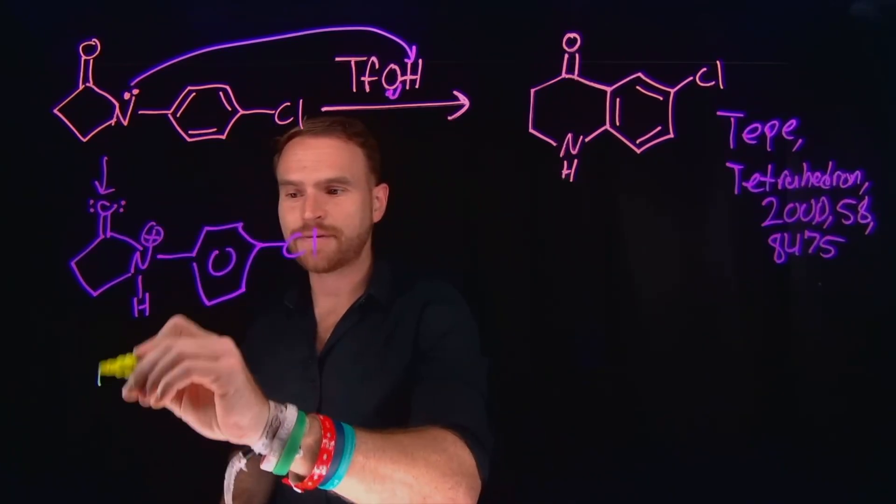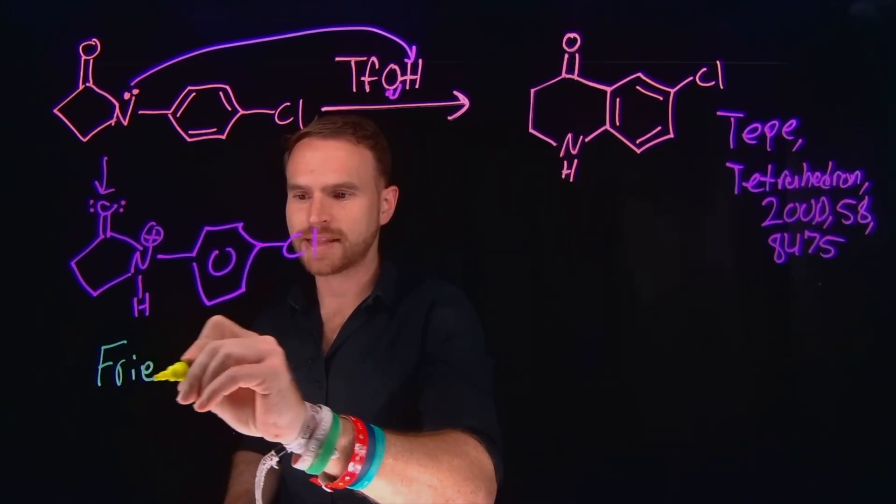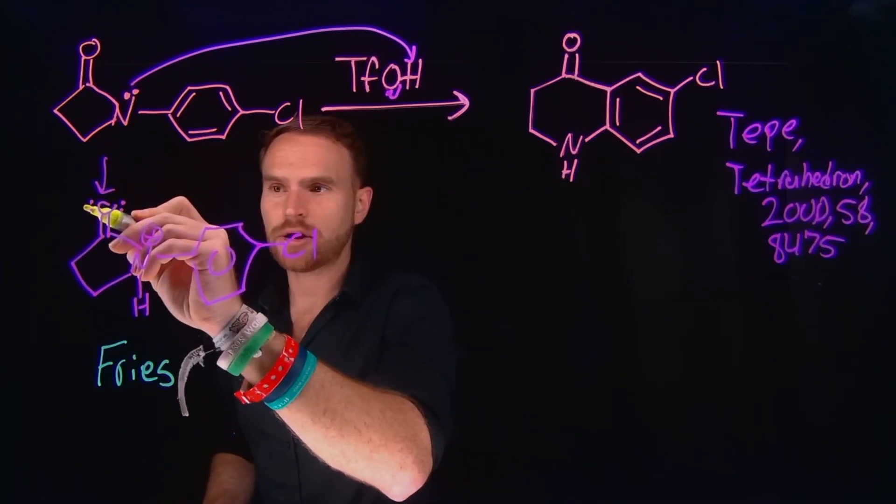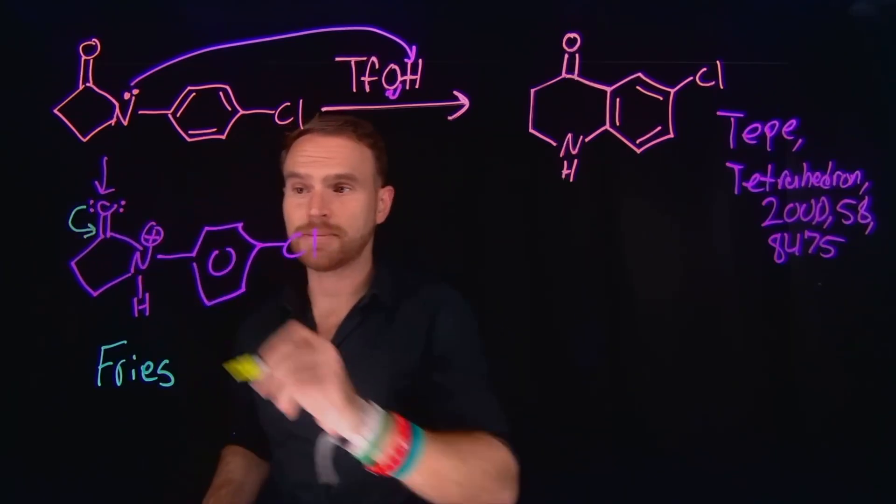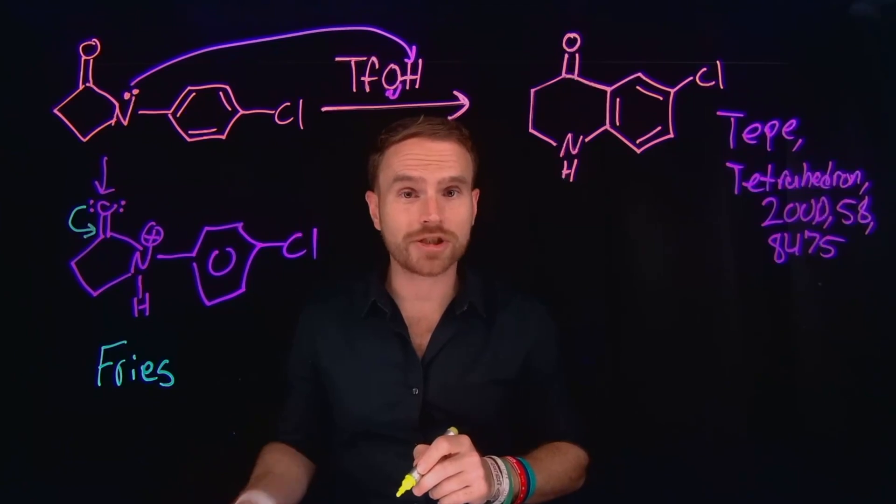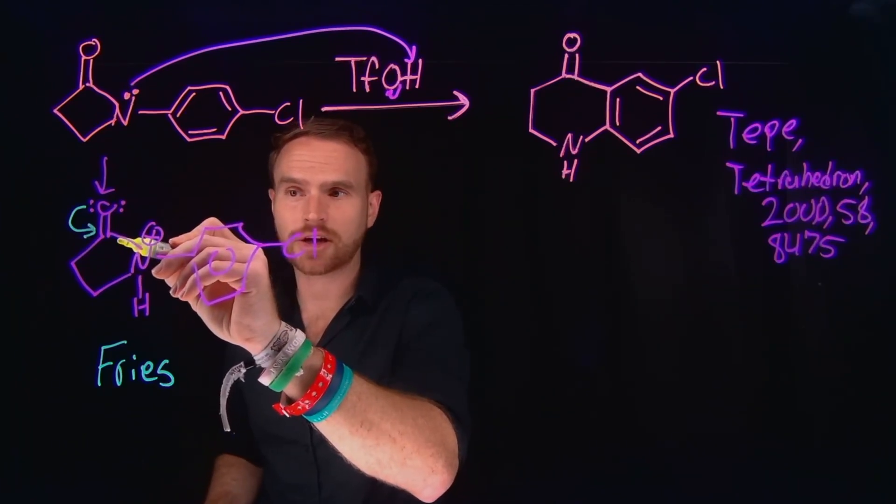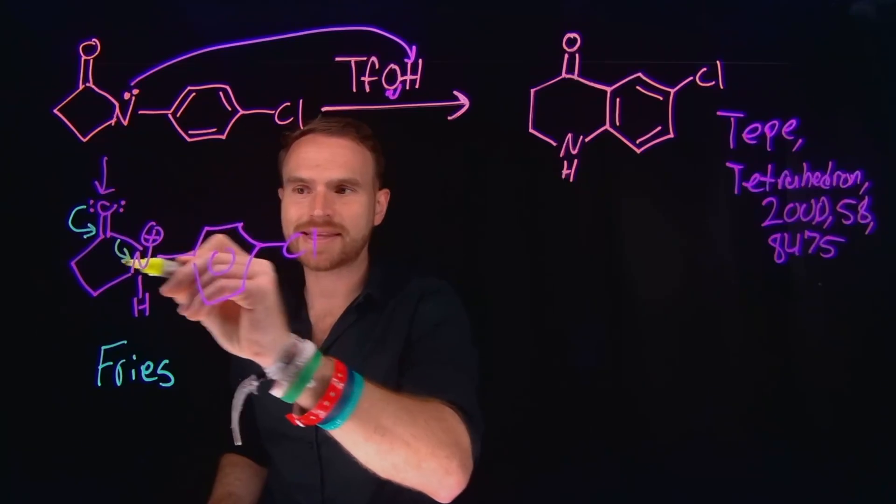What happens next is known as a Fries type of rearrangement, F-R-I-E-S. What will happen is that this lone pair of electrons on oxygen will come down to make a carbon to oxygen triple bond, which is known as a carbonium ion, because we're going to break this carbon to nitrogen bond to make this nitrogen neutral.